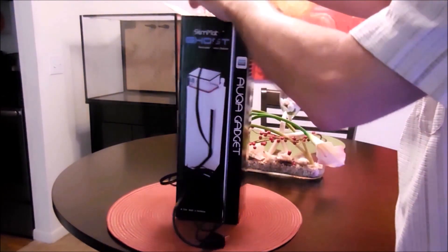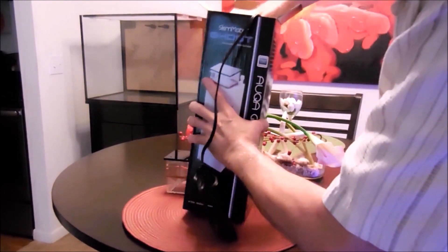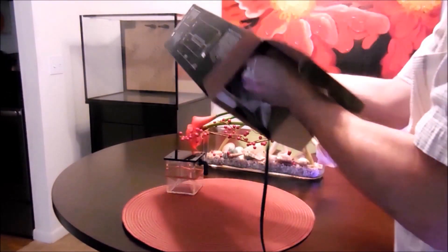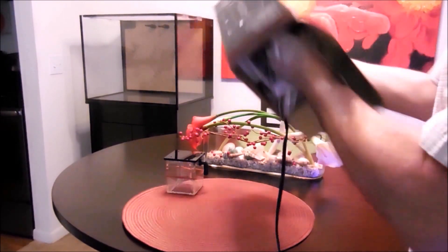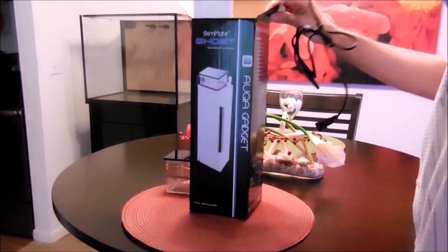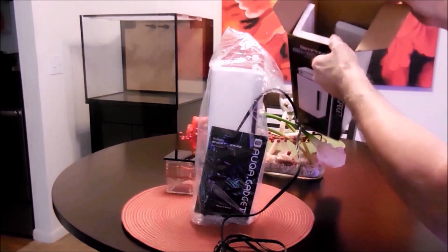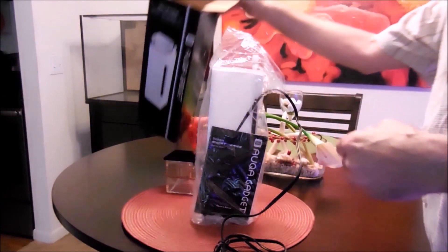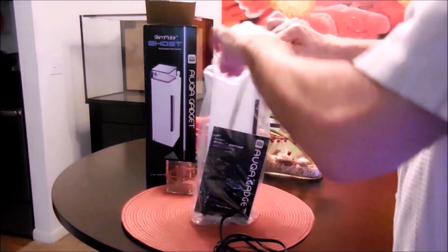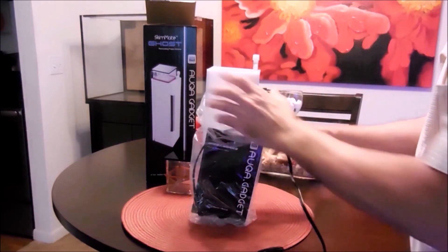Let's take the collection cup off first. And let's take the skimmer out. It comes very well-packed, very well-packed. Then we have the plastic cover. Let's take that out.